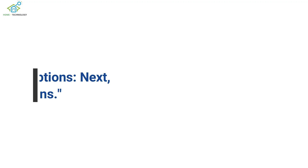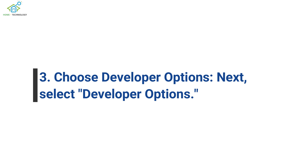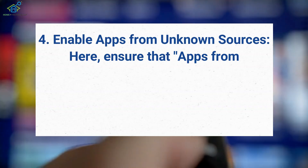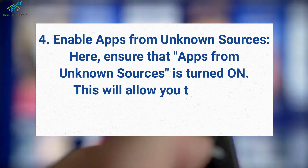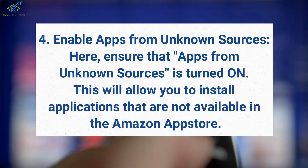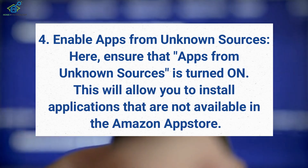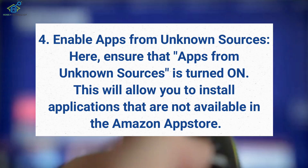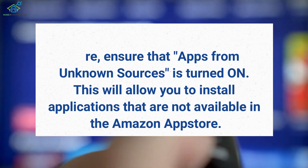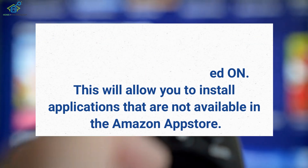Step 3: Choose Developer Options. Next, select Developer Options. Step 4: Enable Apps from Unknown Sources. Here, ensure that Apps from Unknown Sources is turned on. This will allow you to install applications that are not available in the Amazon App Store.